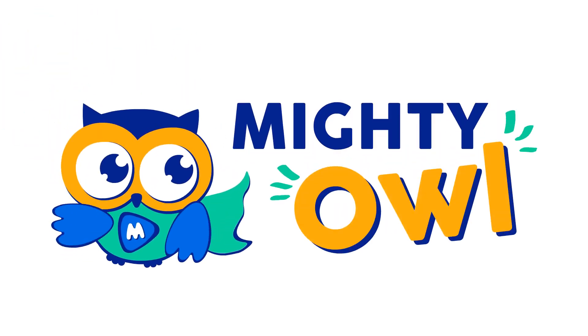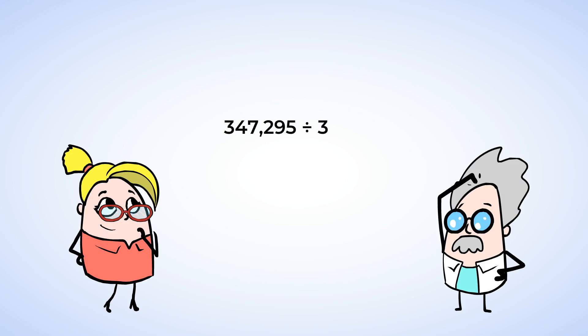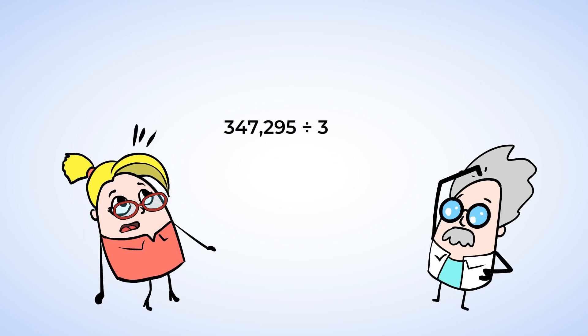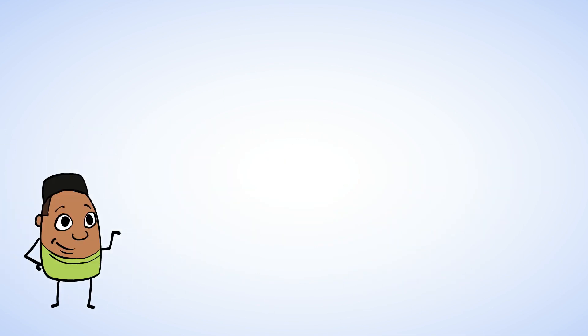Hello, this is Mighty Owl. Whoa, look at this equation. 347,295 divided by 3. Yikes, that's a big number. Will you have a remainder or not? Well, before we get to that, let me show you some cool shortcuts when it comes to dividing big numbers.